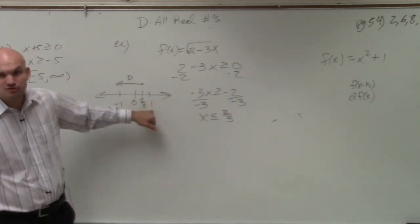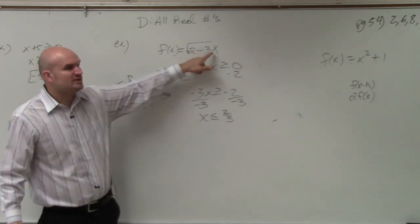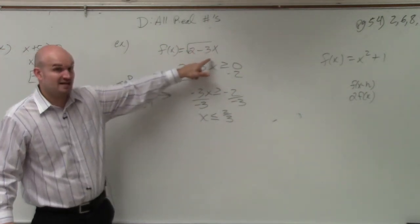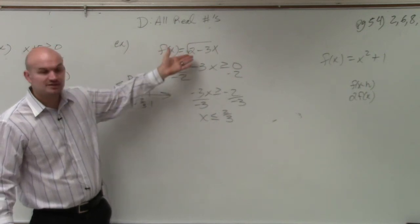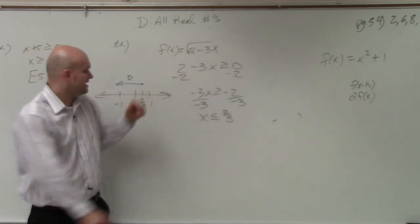So let's just double check. Let's do 1. Negative 3 times 1 is negative 3. Negative 3 plus 2 is negative 1. Can you take the square root of a negative number? No. So yes, that makes sense.